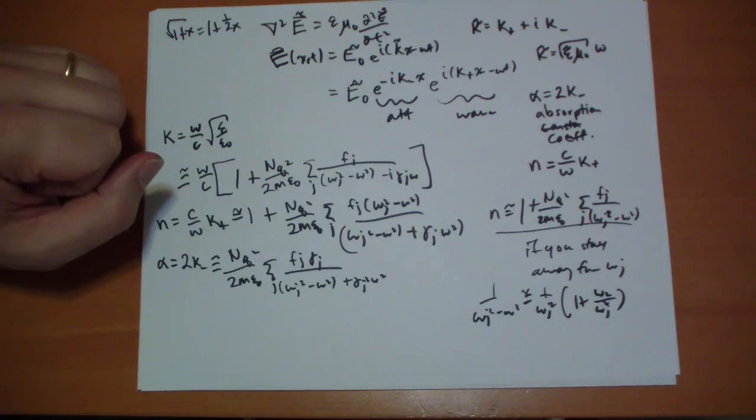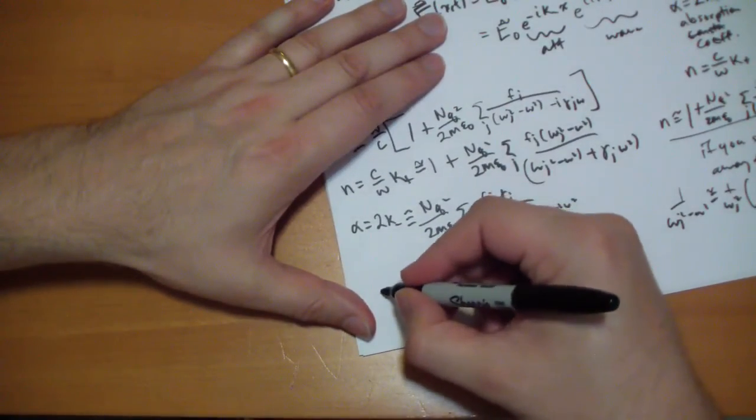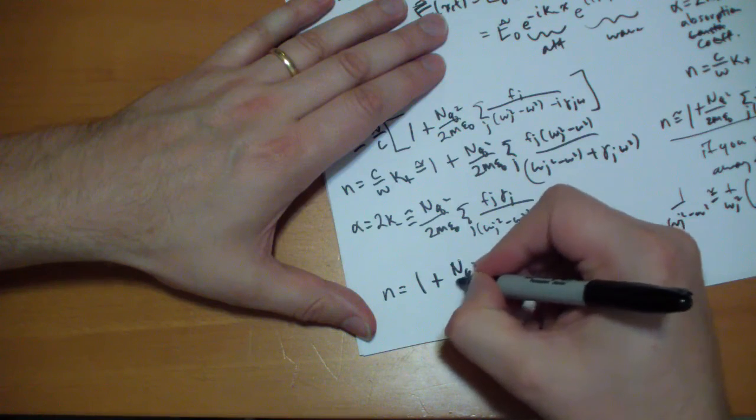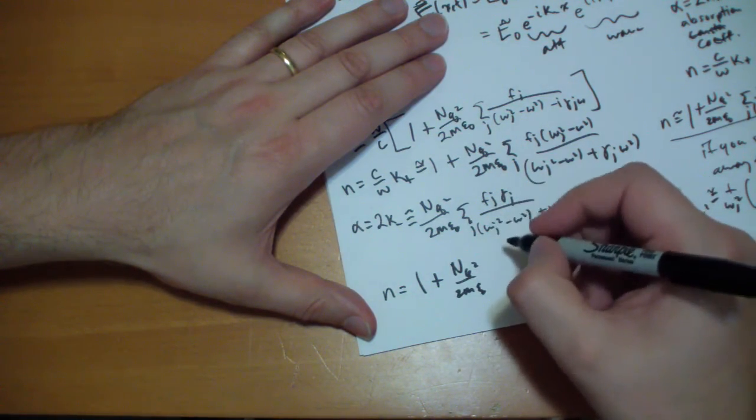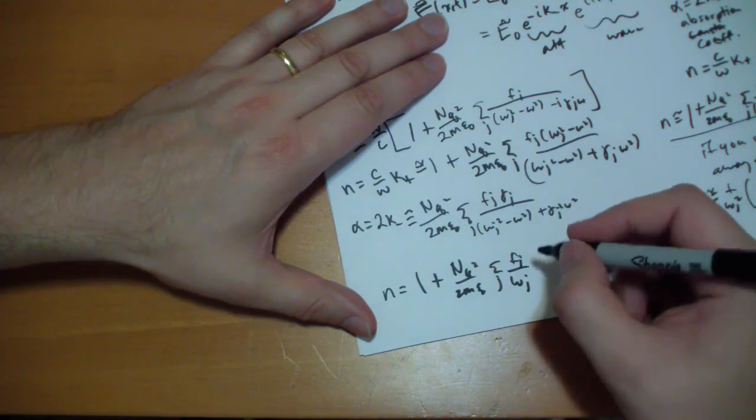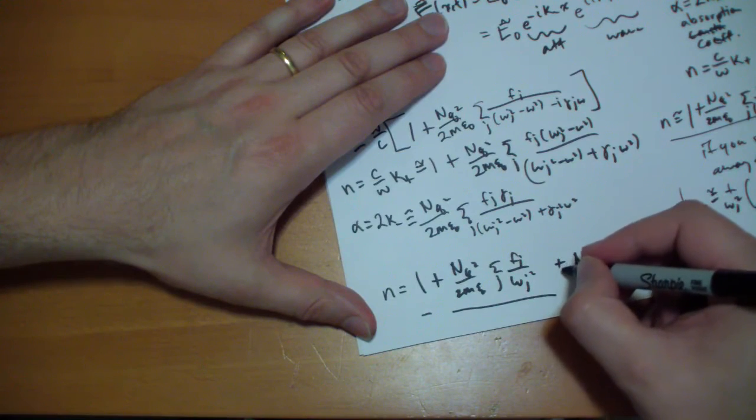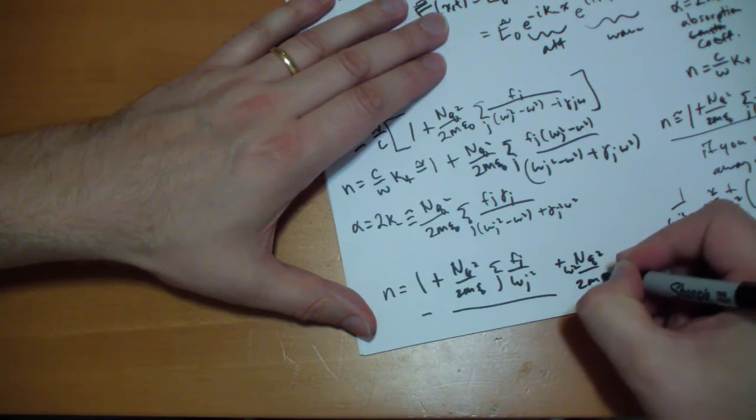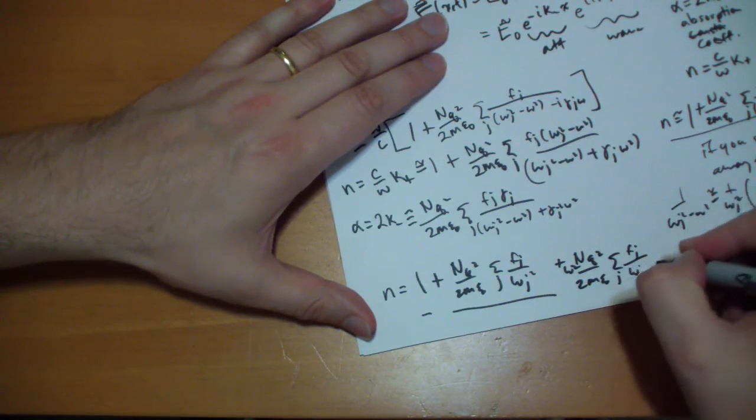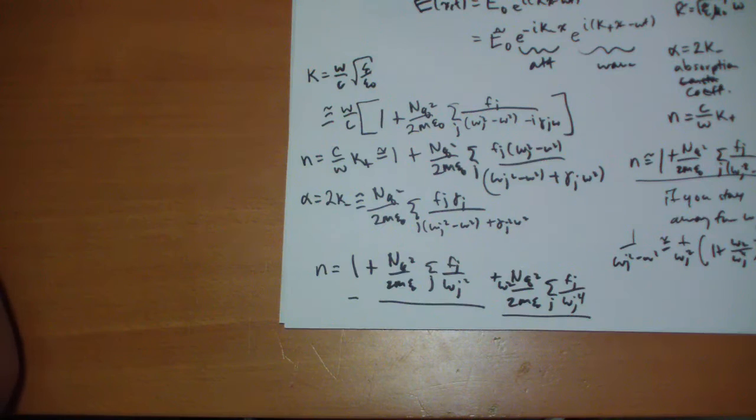And n becomes an even simpler thing. It has three terms. So n becomes 1 plus nq squared over 2m epsilon naught times the sum over j of the number of electrons divided by the absorption frequency squared. This is the first term. Second term, and the third term is omega squared times the sum over j of the number of electrons that have the absorption frequency of that to the fourth power. So you get those three nice terms.